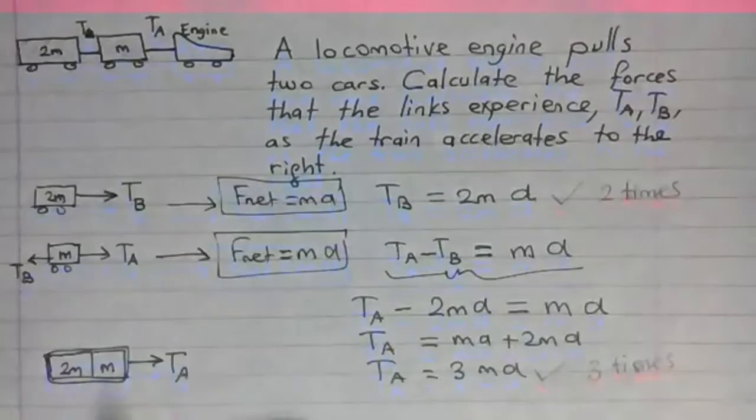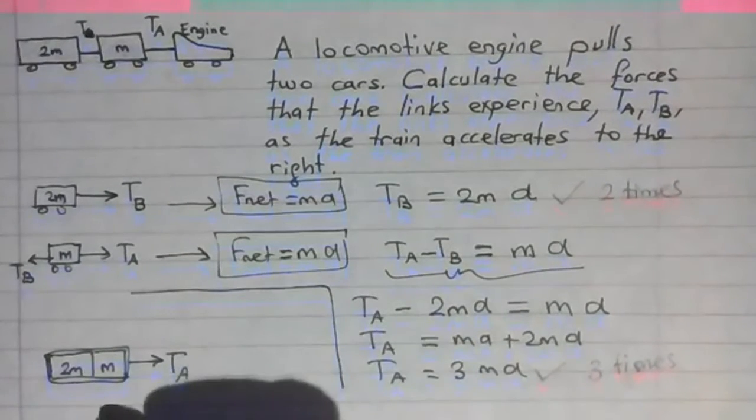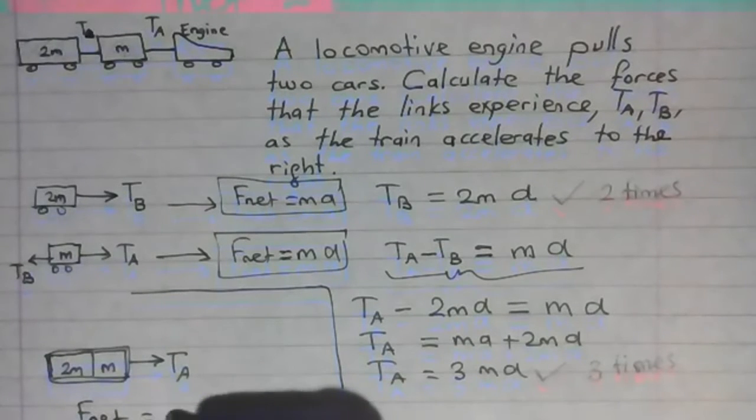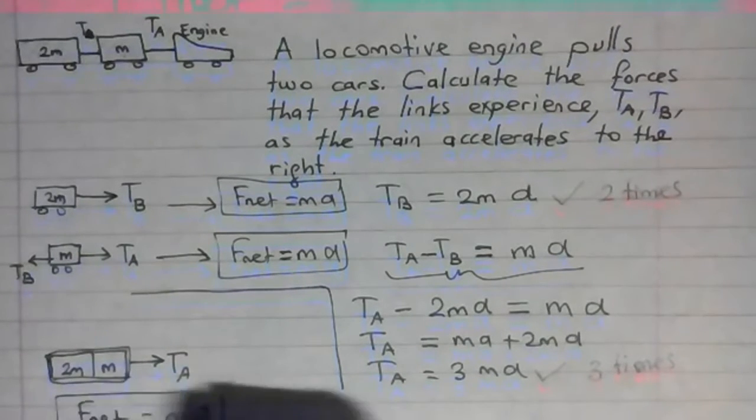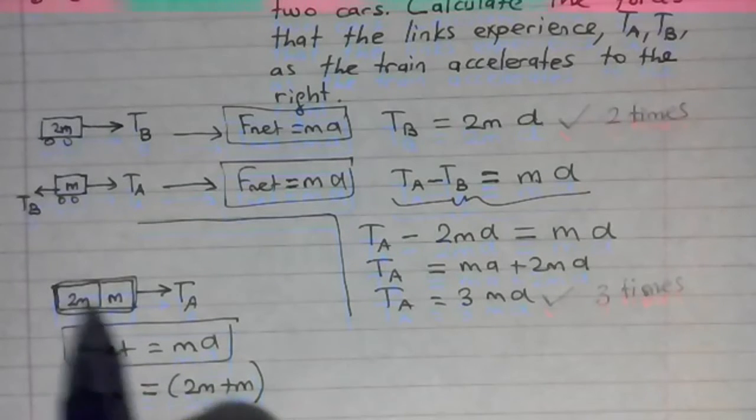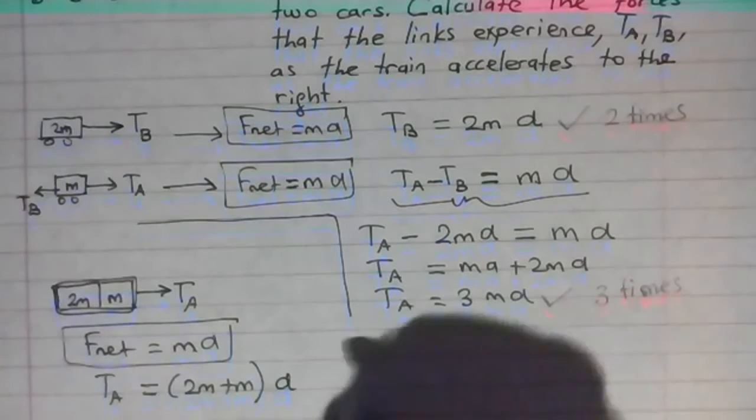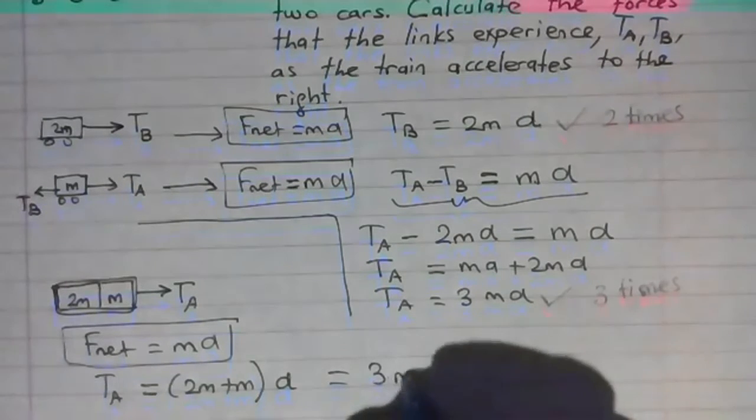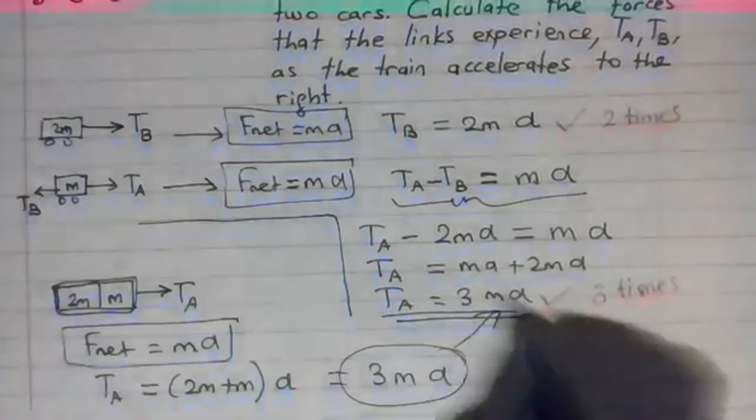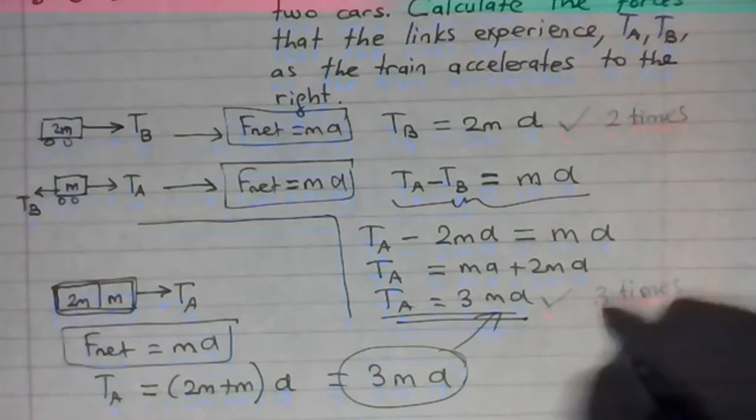With that we can also write Newton's second law, F net equals MA. TA is F net. 2M plus M is the mass, and A is the acceleration of the system. So this gives us 3MA, same as above. This agrees with the above result.